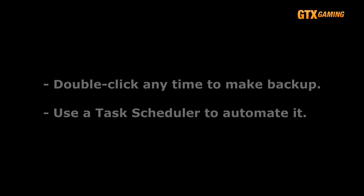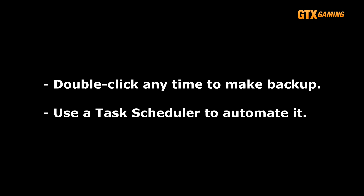Now that we have a working batch file that will make us a database backup, we can just double-click on it any time to make a new backup. Or, we can use any scheduler software to execute it on a regular basis. There are tons of task schedulers out there, but for this tutorial we'll just use good old Windows Task Scheduler. It has a ton of different options, so let's quickly create a basic task that makes us a backup every day at a specific time.